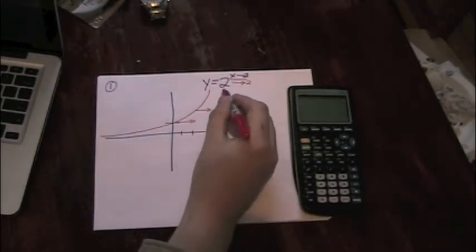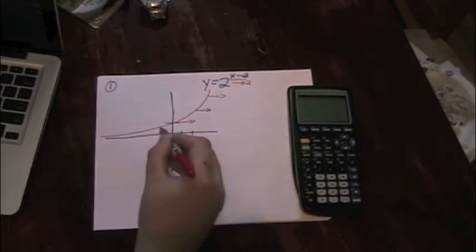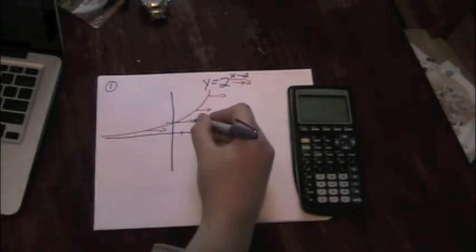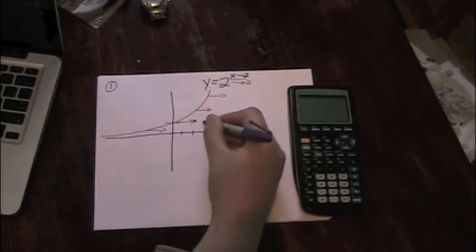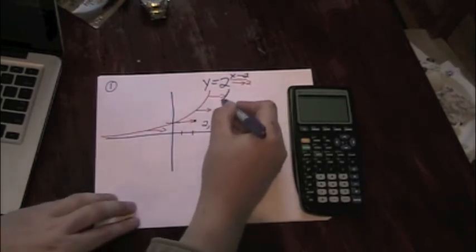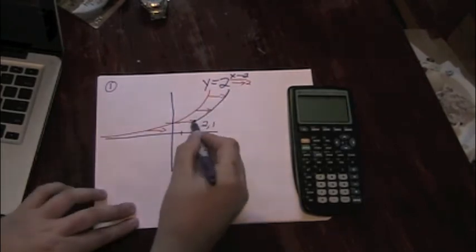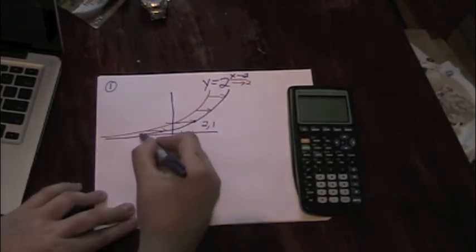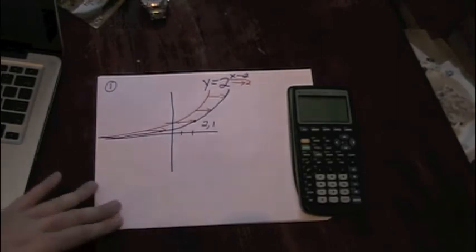Realistically, the only point that matters a great deal as far as a sketch of this graph is going to be the old y-intercept, which is now going to be at 2 comma 1. And our curve is going to follow very close to the old curve, including an asymptote at 0.